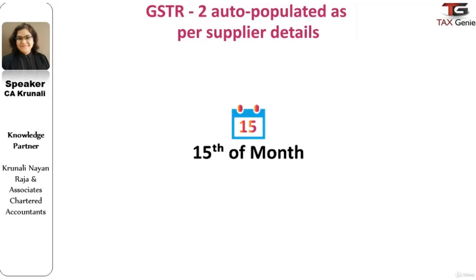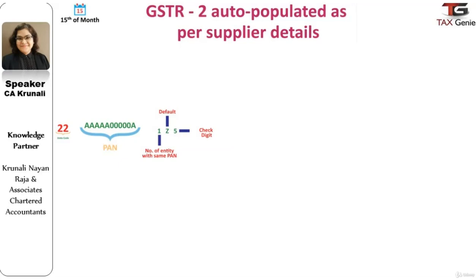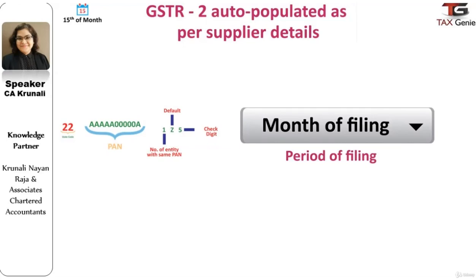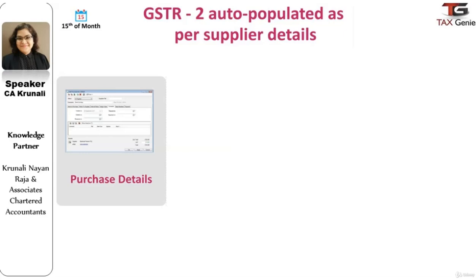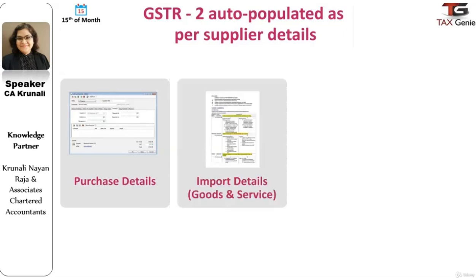GST Return 2 is an auto-populated return in the GST e-filing system. The details and figures in this return are auto-populated based on the details filled in GST Return 1 by its counterparts. The information furnished for this return includes basic details of the taxpayer along with the GSTIN number, period to which the return pertains, details of inward supplies and purchases received from registered taxpayers, details of goods and capital goods received from overseas (import of goods), and details of services received from a supplier located outside India (import of services).